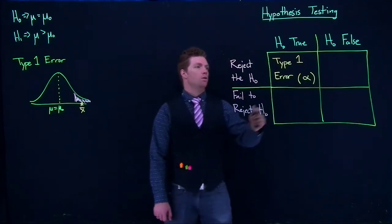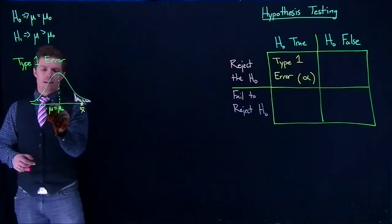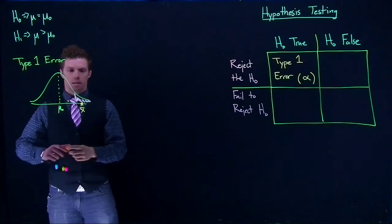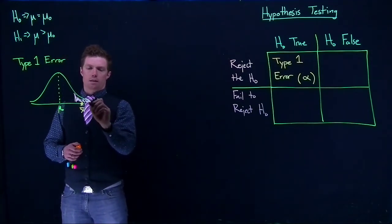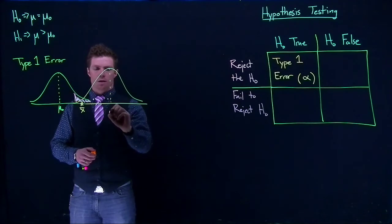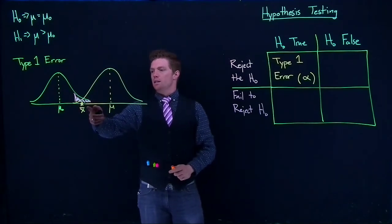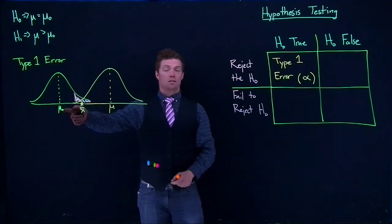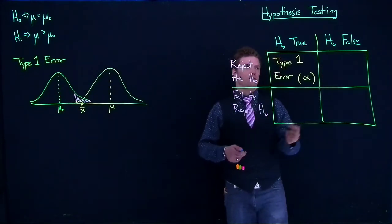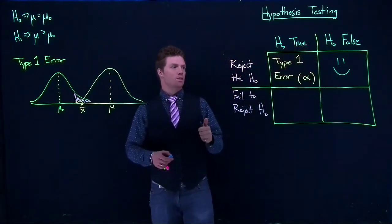Now let's suppose that the null hypothesis is actually false. Let's say the true mean is actually over here — further along the number line — following this distribution, with the true mean right there. The hypothesized mean is over there, and we got a result out here and rejected the null hypothesis. Is that a good decision? Yes — if we reject the null hypothesis when the null hypothesis is actually false, we have made a good decision. That's something we actually want to do.